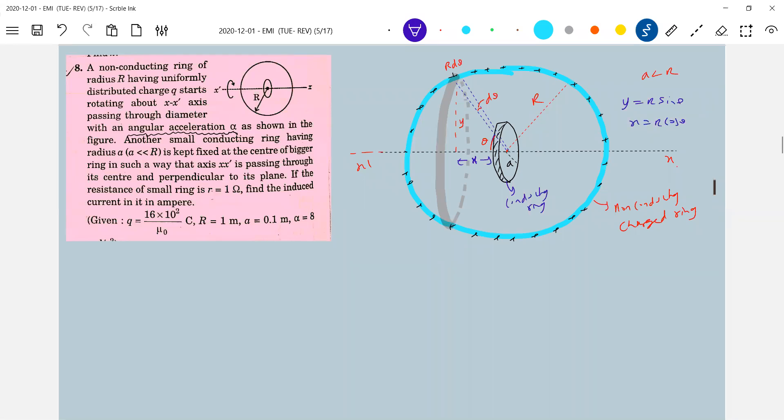First we'll calculate the B bar due to this rotating circular strip. Then first we'll define the charge density q by 2 pi r. So what is the charge in that small strip? dq is equal to lambda into r d theta.